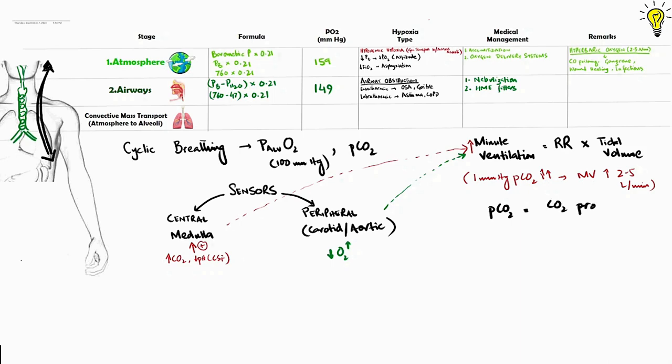Now as per the equation, then carbon dioxide pressure is CO2 production divided by alveolar or minute ventilation. So adding these two formulas in the table, peripheral chemoreceptors are more sensitive to oxygen pressures.